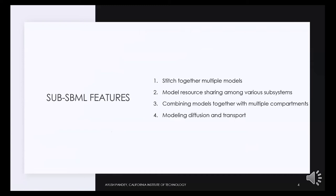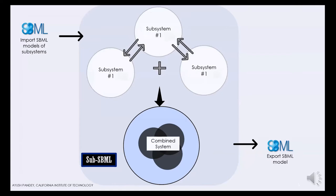Exactly what sub-SBML can do: it can stitch multiple models together, it can model resource sharing among various subsystems, combine biological systems that have multiple compartments together, and one of the most important features is that it can model systems where diffusion occurs for transport of species in and out of the membrane. We will look into these features one by one, beginning with a pictorial representation of sub-SBML's features.